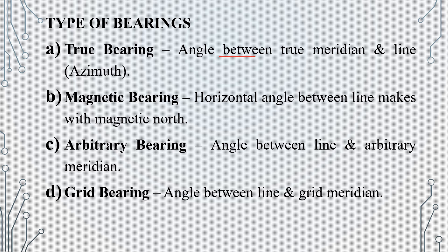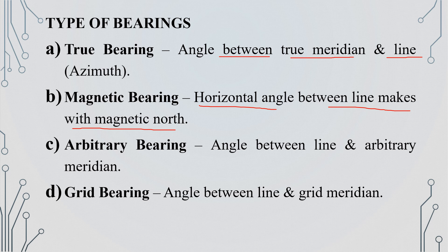The angle between the true meridian and a line is the true bearing. The next one is magnetic bearing. Magnetic bearing is the horizontal angle a line makes with the magnetic north. One line forms a horizontal angle with the magnetic north.